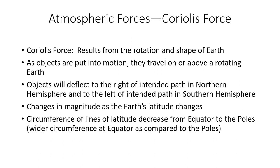Now let's move on to Coriolis force. Coriolis force is an apparent force that generally results from the rotation and shape of the Earth. As objects are put into motion — such as the wind — those objects travel on or above a rotating Earth. If we're looking down from the North Pole perspective, the Earth is rotating counterclockwise. Objects will therefore deflect to the right of their intended path of motion in the Northern Hemisphere, and to the left in the Southern Hemisphere. Changes in magnitude occur as the Earth's latitude changes — the Coriolis force becomes stronger as we head poleward.